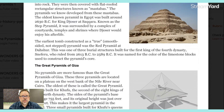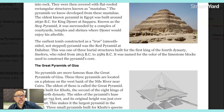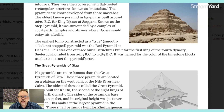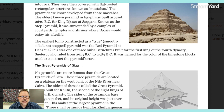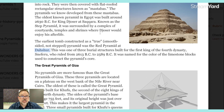This is known as a step pyramid. It was surrounded by a complex of courtyards, temples, and shrines where Djoser would enjoy his afterlife. The earliest tomb constructed as a true smooth-sided — not stepped — pyramid was the Red Pyramid at Dashur. I think that's how you say it: Dashur.